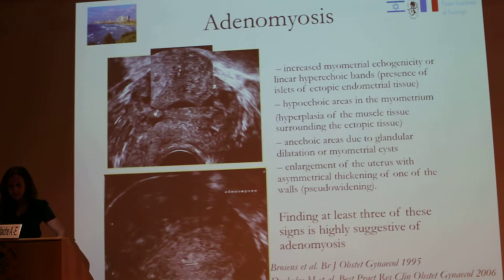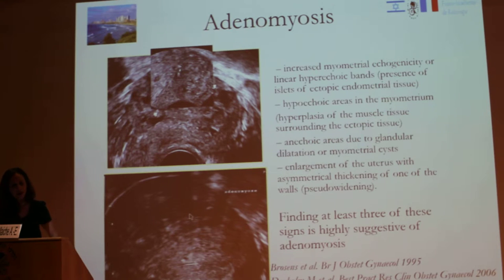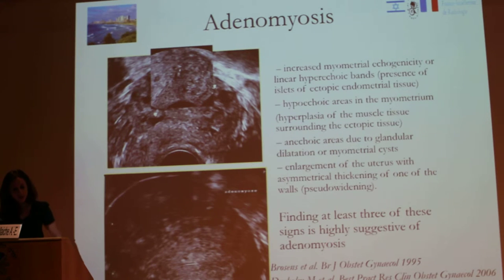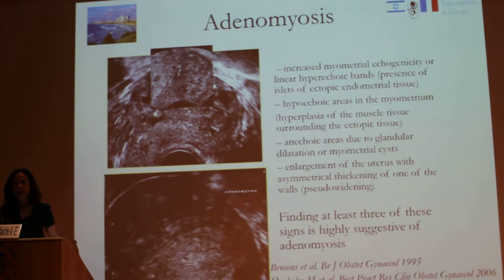The ultrasound diagnosis includes: increased myometrial echogenicity or linear hyperechoic bands as seen here at the bottom of the slide; the presence of hypoechoic areas in the myometrium; anechoic areas due to glandular dilatation and myometrial cysts; and enlargement of the uterus with asymmetrical thickening of one wall — the posterior side being bigger than the anterior. When you have found at least three of these signs, you can say that there is adenomyosis.